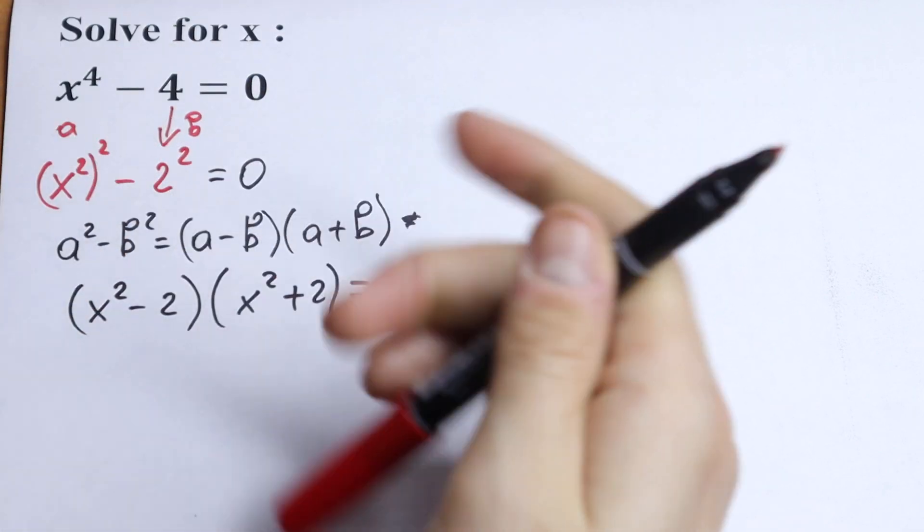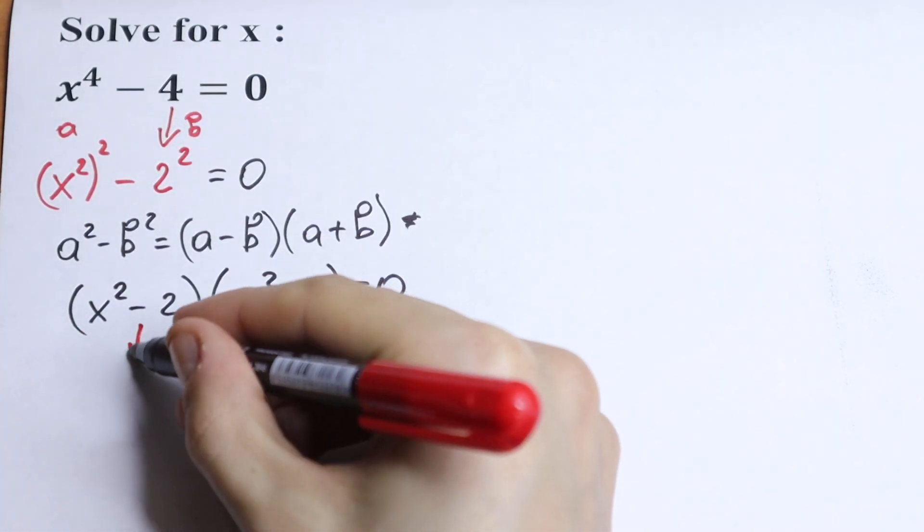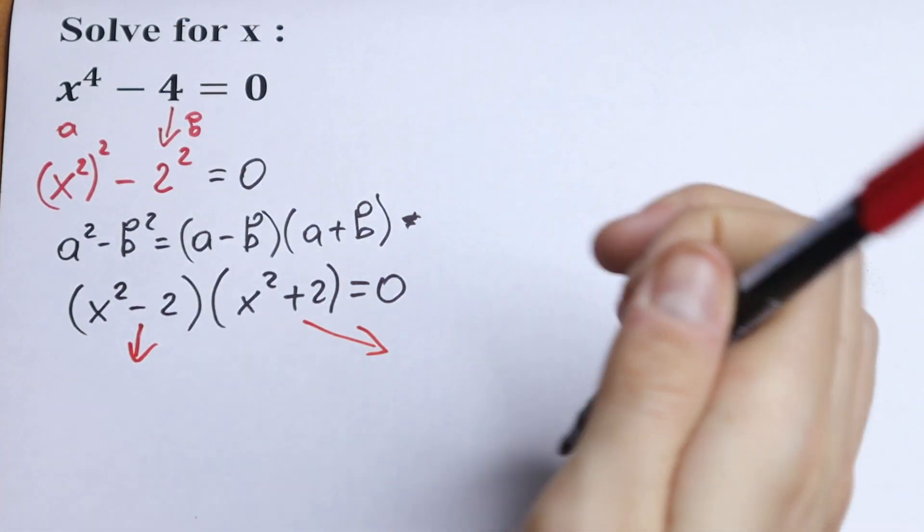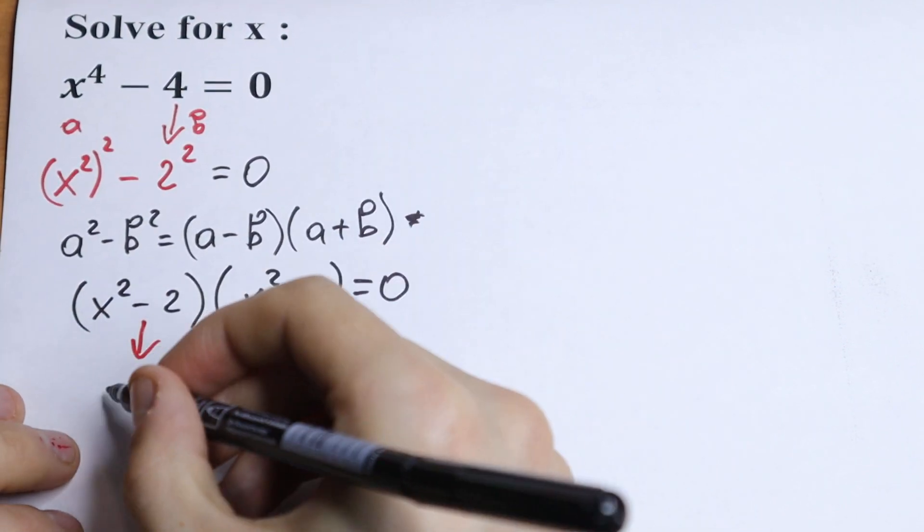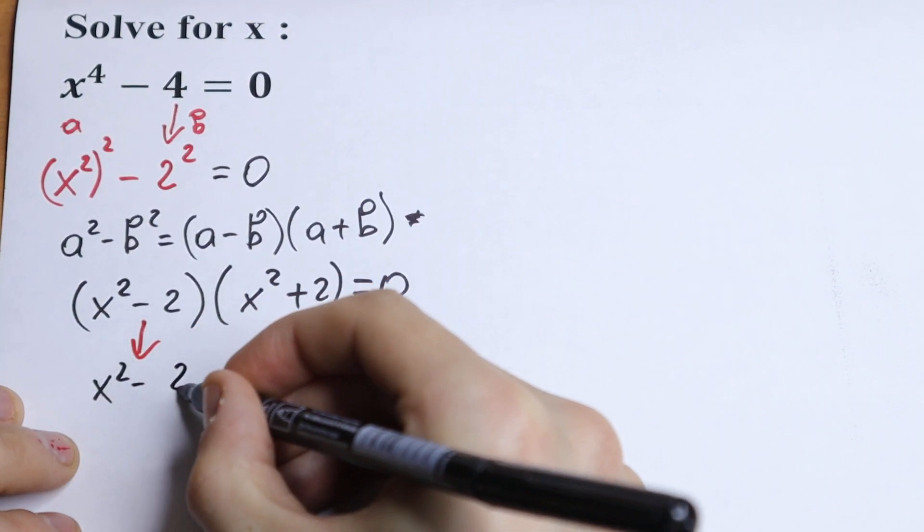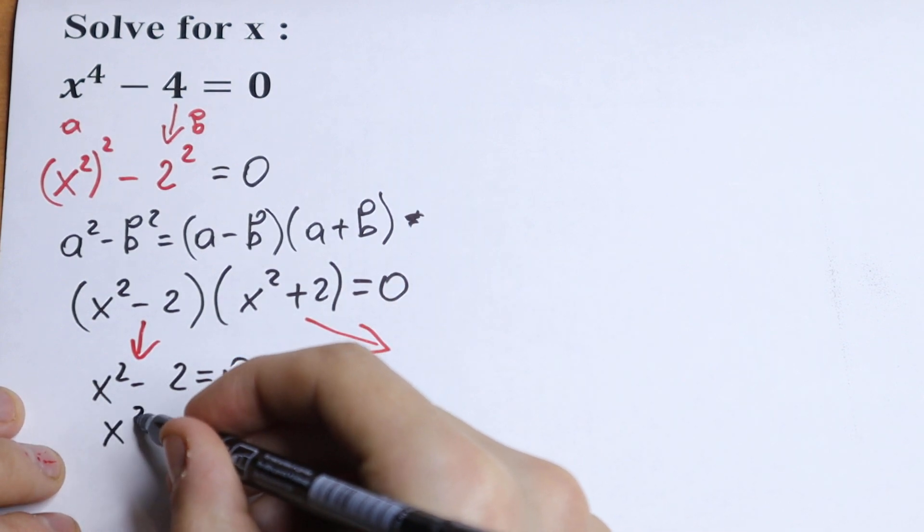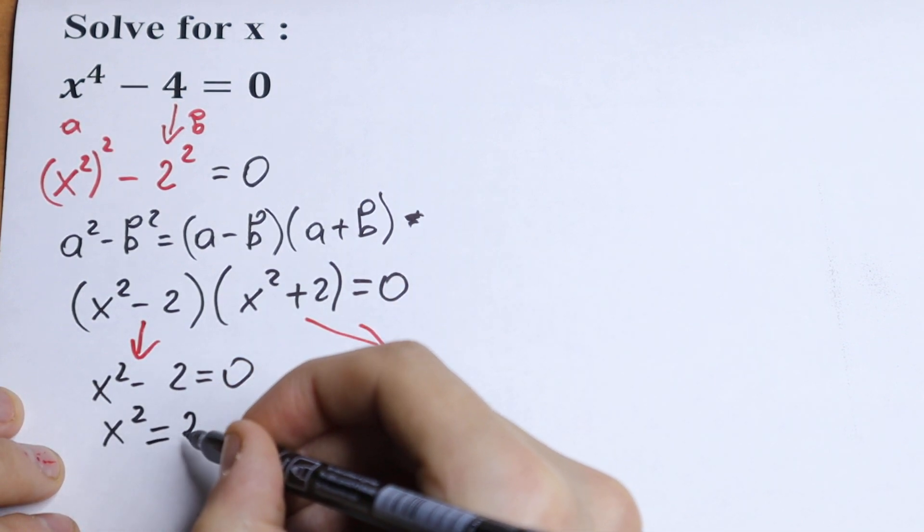So the first case. x square minus 2 equal to 0. So let's solve this equation. We will have x square minus 2 equal to 0 and x square equal to 2.